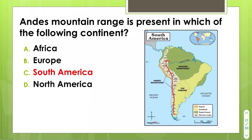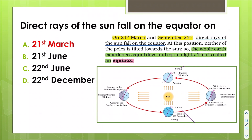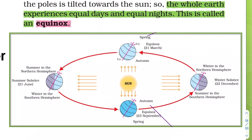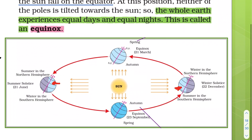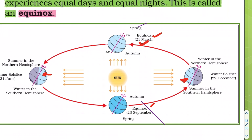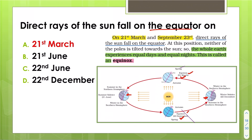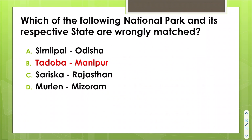The Andes mountain range question relates to when direct rays of the sun fall on the equator. The sun's rays fall directly on the Tropic of Cancer or Tropic of Capricorn in other cases, but when rays fall on the equator it happens during equinoxes. The equinox occurs on 21st March and 23rd September, so 21st March is the answer.